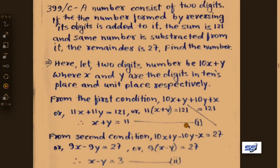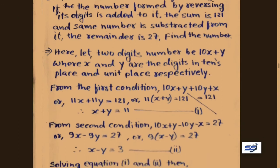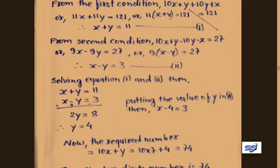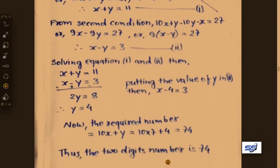Equation 1 is x plus y equals 11 and equation 2 is x minus y equals 3. To solve: place equations up and down. Changing the sign of equation 2 and subtracting: x cancels, giving 2y equals 11 minus 3 equals 8, therefore y equals 4.